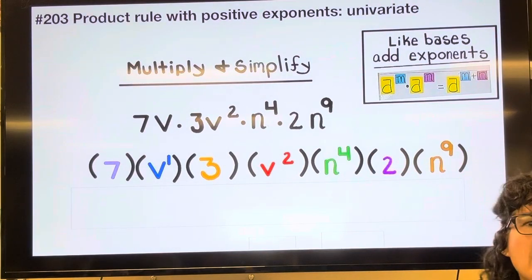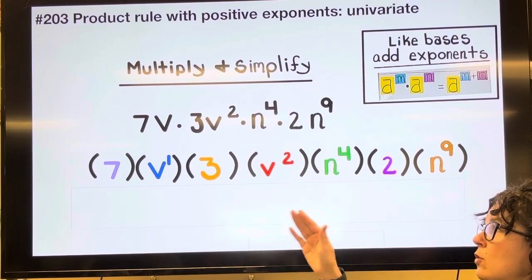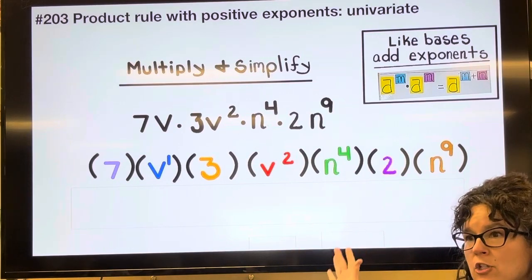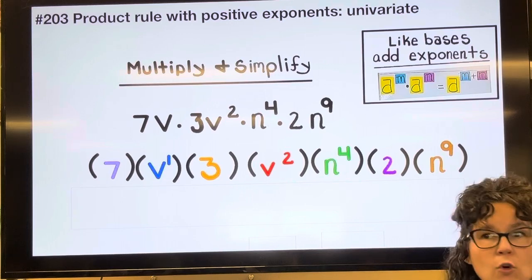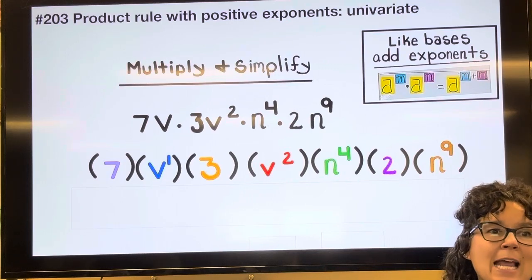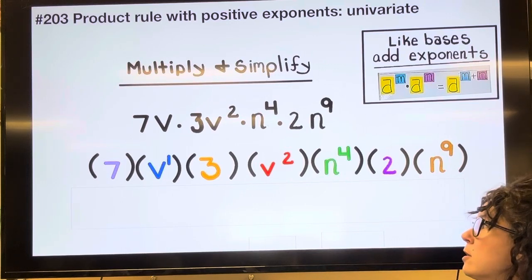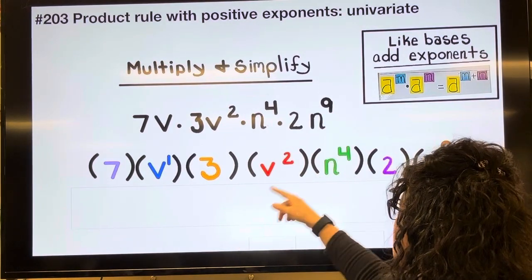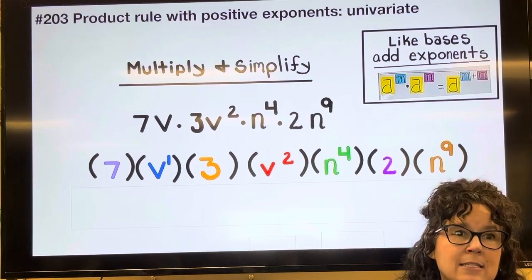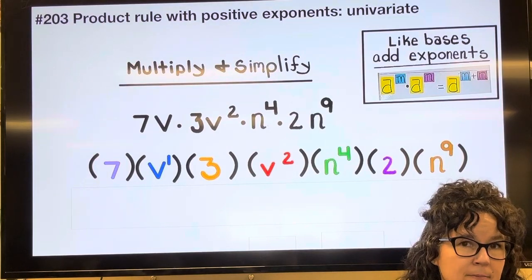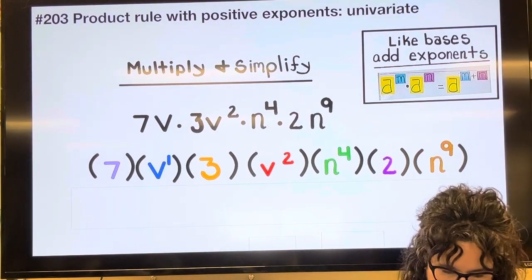And then if I reorder this so that my numbers are first and my letters are second, keeping in mind that typically formatting, we put things in alphabetical order. So I'm looking at the V's and the N's. At the very end, I'll probably put the N's and then the V's, but it's really a personal preference here.